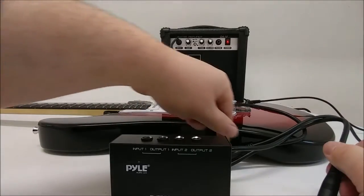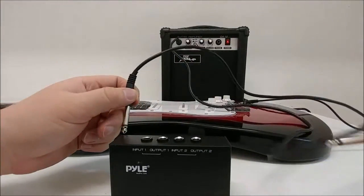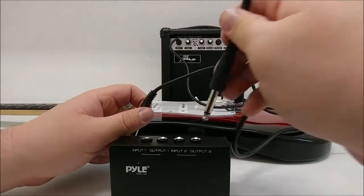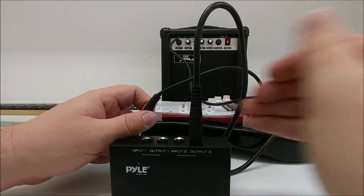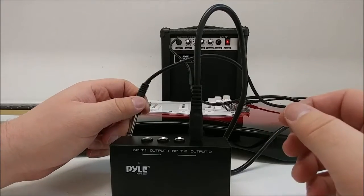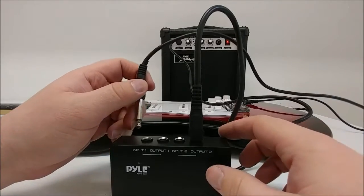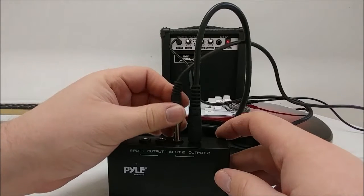Now we're going to quickly hook up the unit. We're going to first take the cord from our amplifier and plug it into output 2. As you can see the buzzing and the humming noise has gone away and now we will plug in the guitar to input 2.